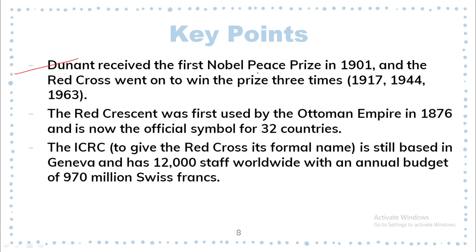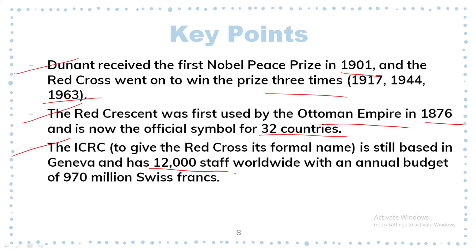Dunant received the first Nobel Prize in 1901, and the Red Cross went on to win the prize three times: in 1917, 1944, and 1963. The Red Crescent was first used by the Ottoman Empire in 1876 and is now the official symbol for 32 countries. The ICRC — the International Committee for the Red Cross — to give the Red Cross its formal name, is still based in Geneva and has 12,000 staff worldwide with an annual budget of 970 million Swiss francs.